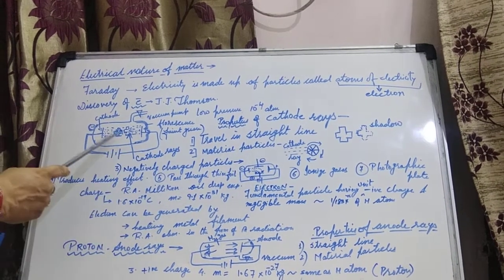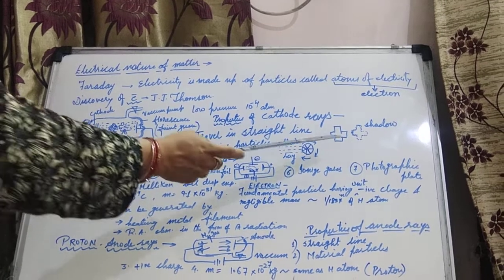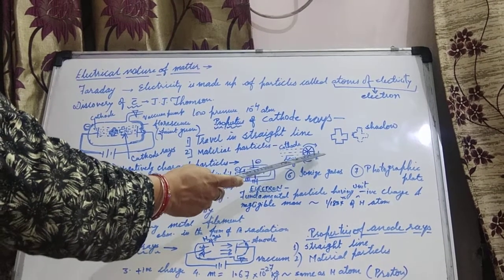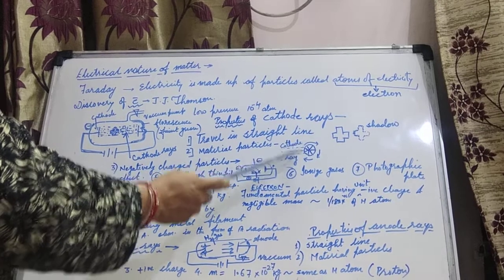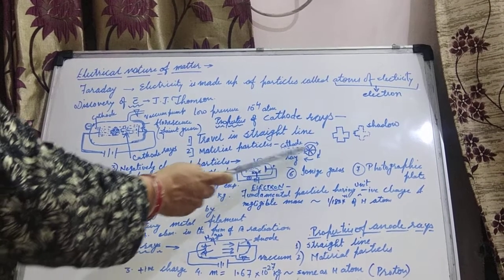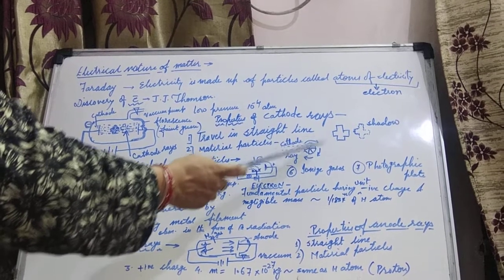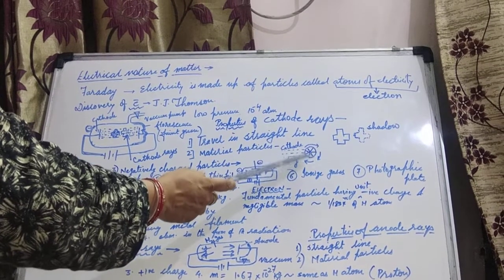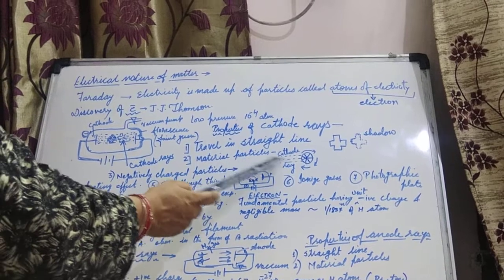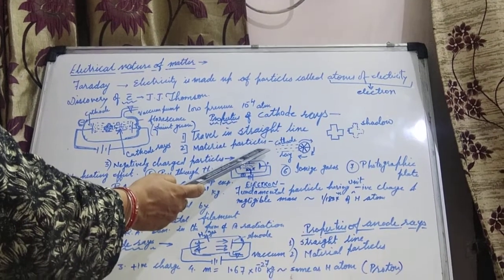The next property of cathode rays is that they are made up of material particles. When a paddle wheel is kept in the path of cathode rays, that paddle wheel starts rotating. As the cathode rays are striking to that paddle wheel, the wheel starts rotating. This proves that cathode rays are having material particles, energy particles in them.